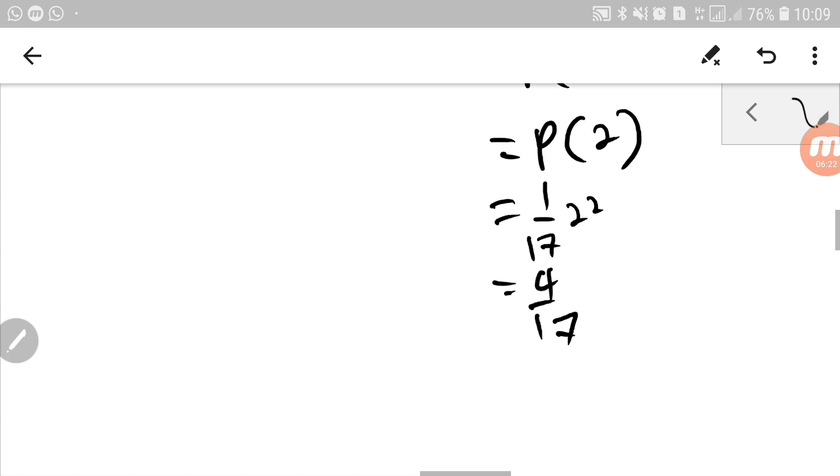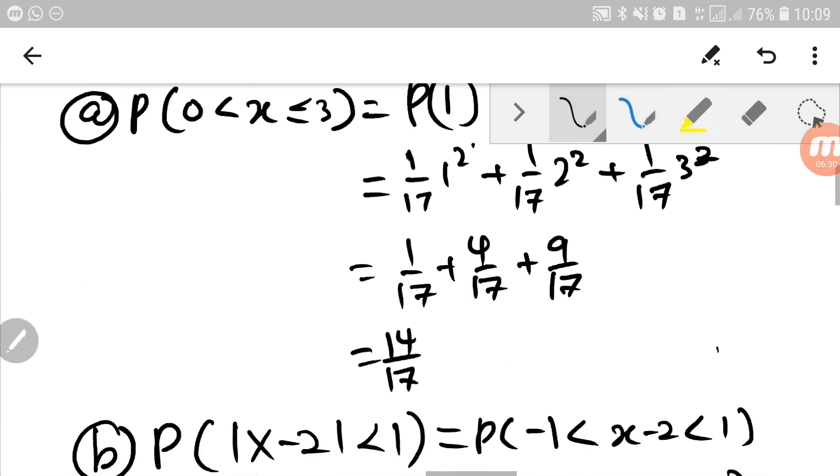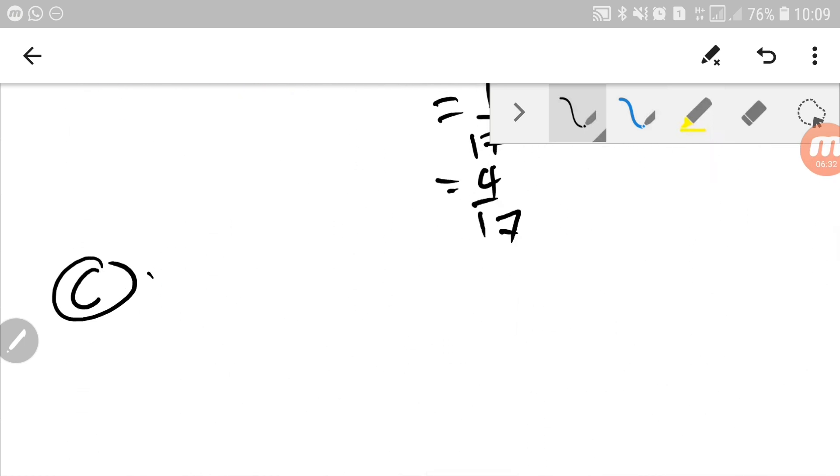Let's move on to the third one, part C. Part C, even number. So P even, I made it shorter because my handwriting is way big. So P even, it means that when the x is even.